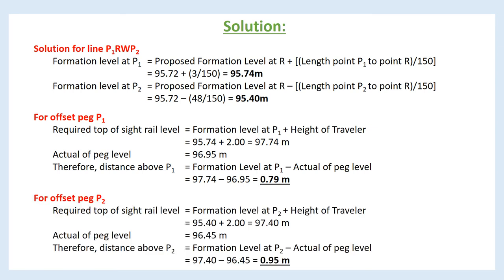For offset peg P2: required top-of-site-rail level = formation level at P2 + height of traveler = 95.40 + 2.00 = 97.40 m. Actual peg level = 96.45 m. Therefore, height of site rail above P2 = 97.40 − 96.45 = 0.95 m.